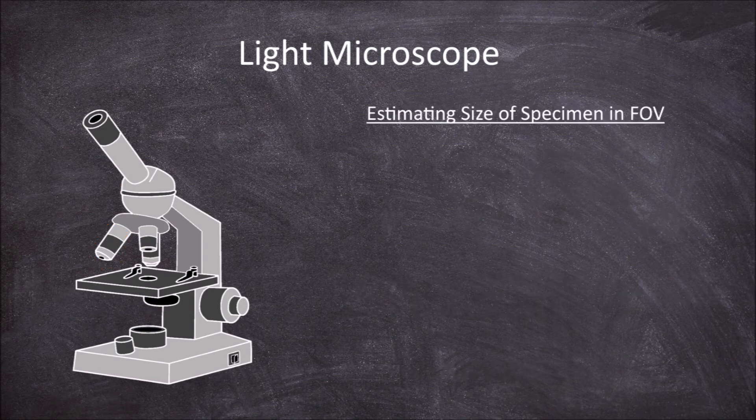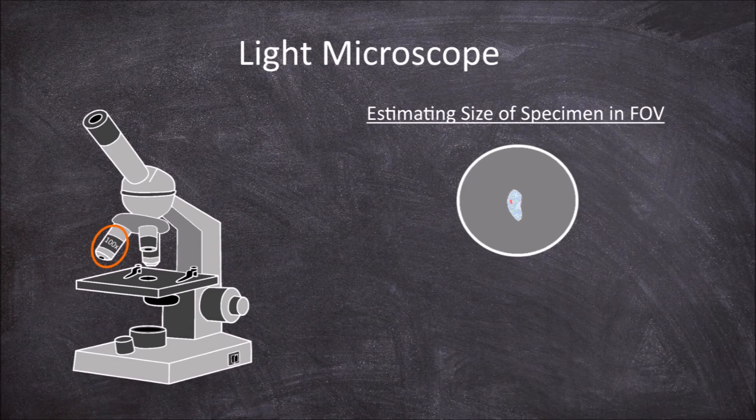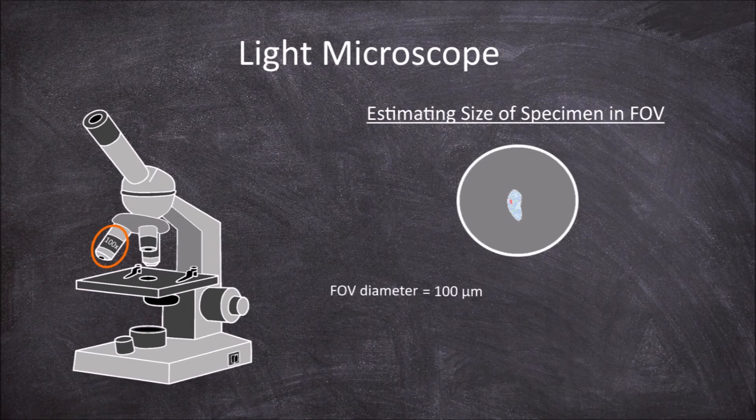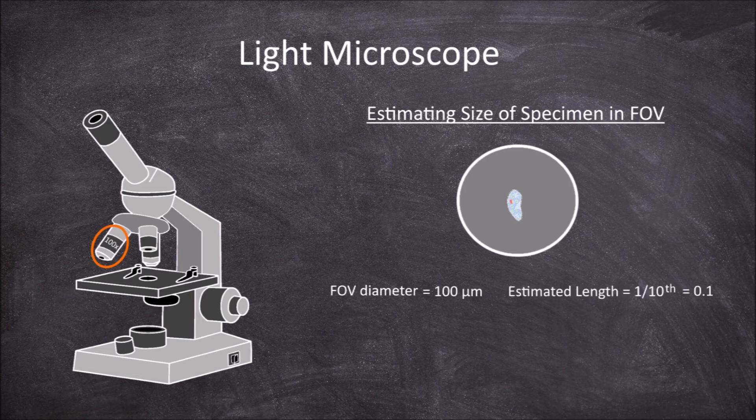How do you estimate the size of a specimen in the field of view? If we look at this paramecium under high magnification of 100 times, the first thing you need to do is find out the field of view diameter as previously explained, which gave us a field of view diameter of 100 micrometers. You then need to estimate the fraction of this field of view diameter the sample takes up. This paramecium takes up around one-tenth of the field of view diameter.